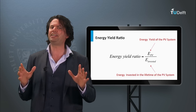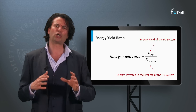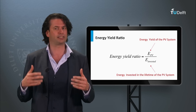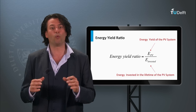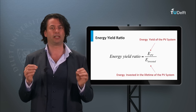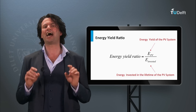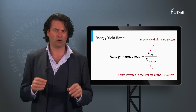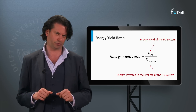As the PV yield depends on several factors like the size of the PV system, quality of the panels, the technology choice, etc., it is possible to see a wide range of energy yield ratios when observed in practice. PV modules can have this ratio as large as 10 to 15, while PV systems will usually have smaller energy yield ratios.